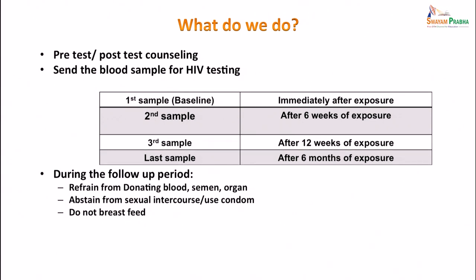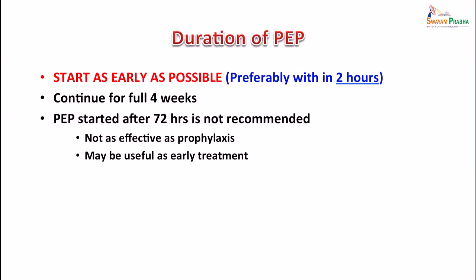During the follow-up period, refrain from donating blood, serum or organs, abstain from sexual activities, use condoms, and do not breastfeed. PEP should be started as early as possible — within 2 hours — and continued for a full 4 weeks. PEP started after 72 hours is usually not recommended as it is not effective.